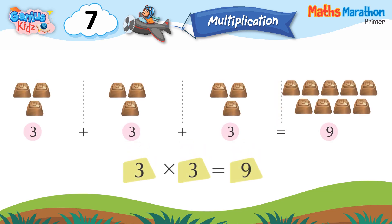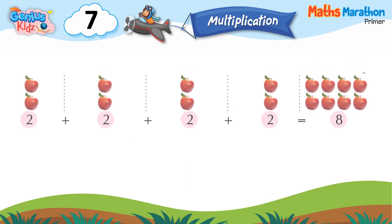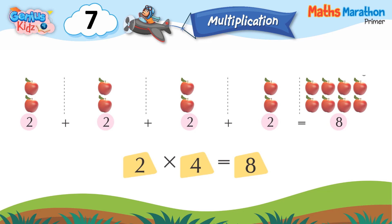3 plus 3 plus 3 is equal to 9. 3 multiply 3 is equal to 9. 2 plus 2 plus 2 plus 2 is equal to 8. 2 multiply 4 is equal to 8.